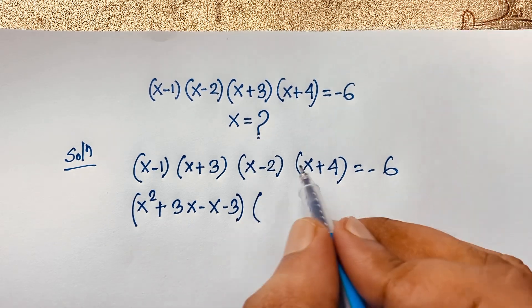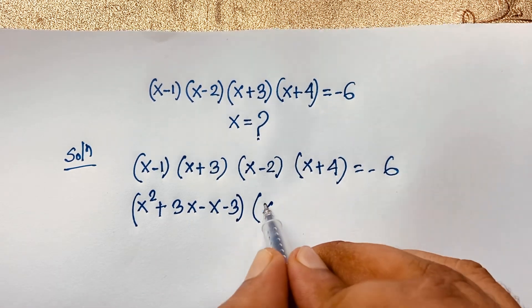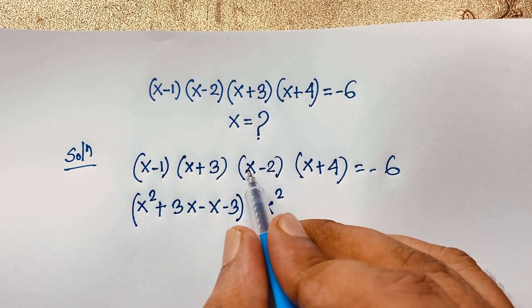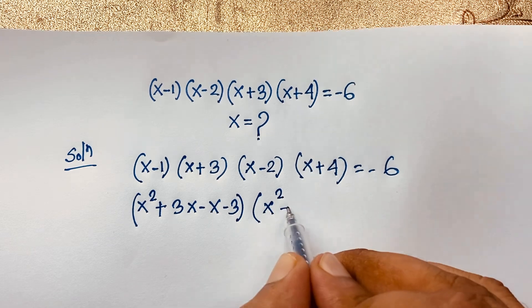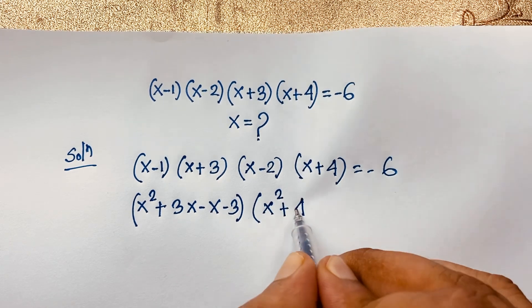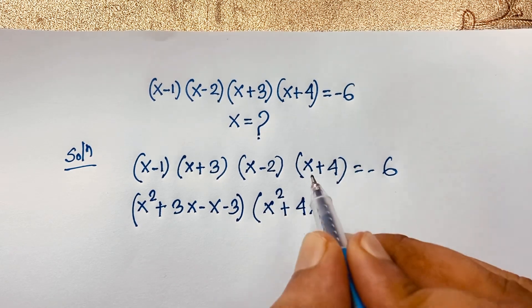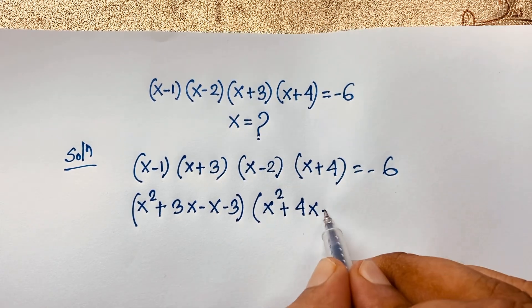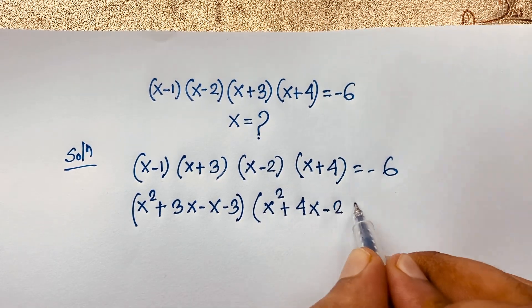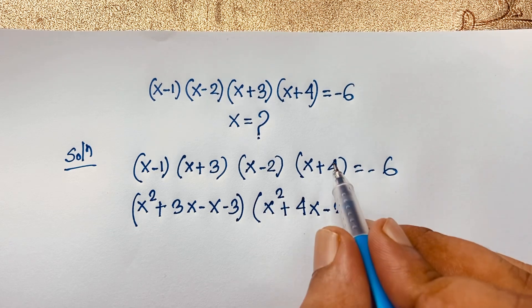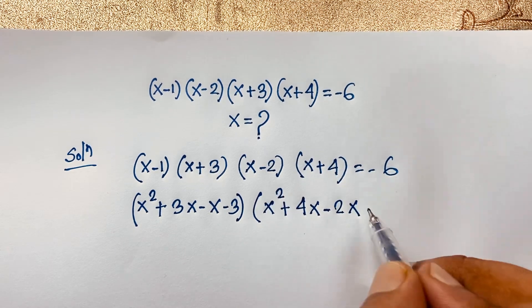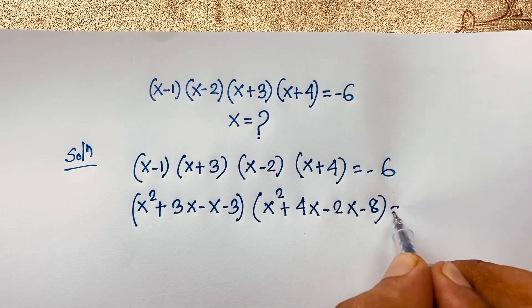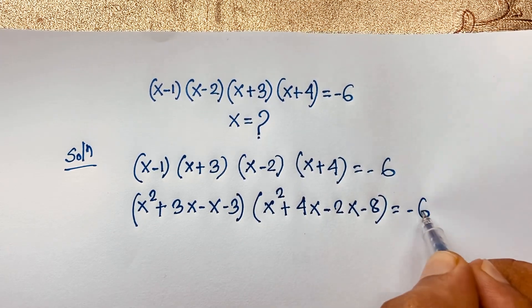Expanding the second bracket: x times x is x squared, x times 4 is 4x, negative 2 times x is negative 2x, and negative 2 times 4 is negative 8. All equal to negative 6.